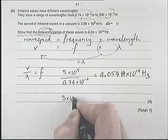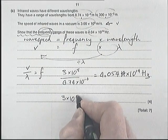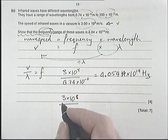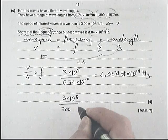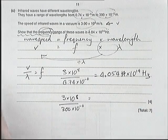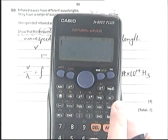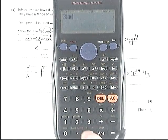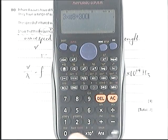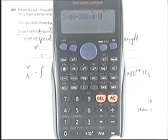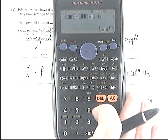Again, for practice: 3 × 10^8 divided by 300 × 10^-6. That's 1 × 10^12 Hertz as well.